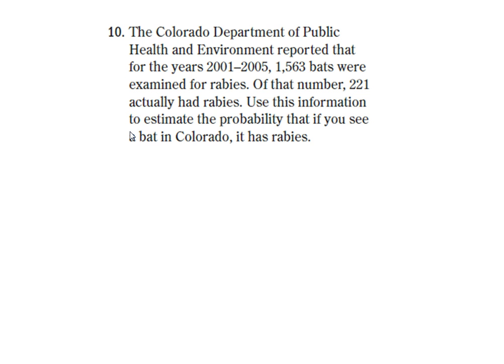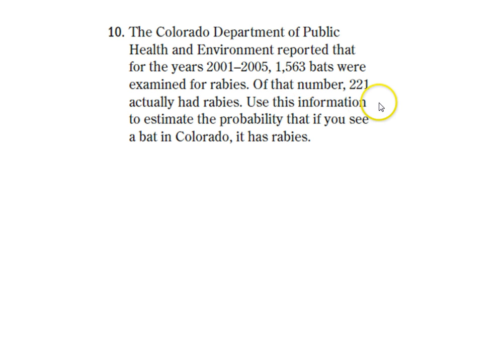This is a relative frequency — it's based on information that we have. So now we say, if we go to Colorado and we see a bat, what are the chances that it has rabies based on the information collected by the Department of Public Health and Environment? Well, what percentage of the bats that were found actually had rabies? That would be 221 out of 1,563.